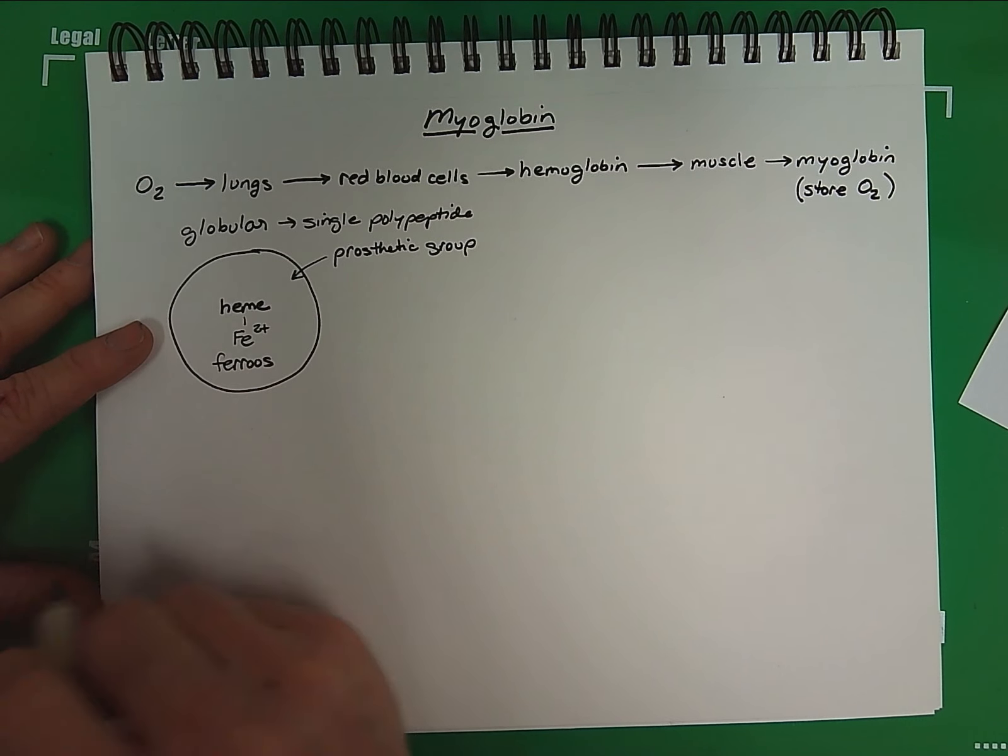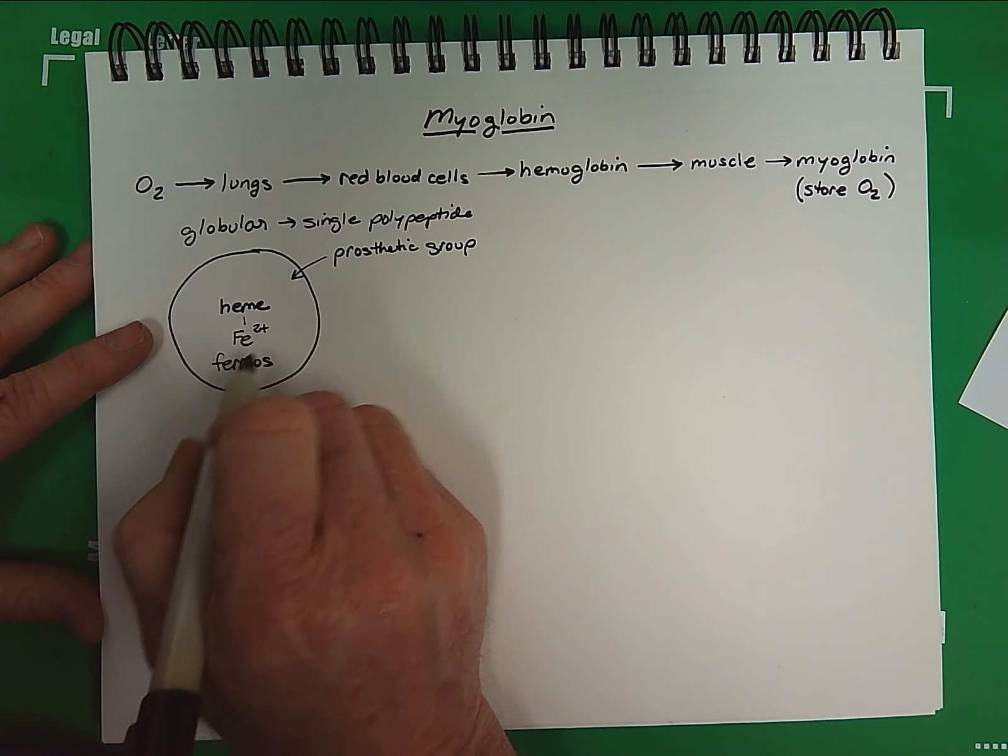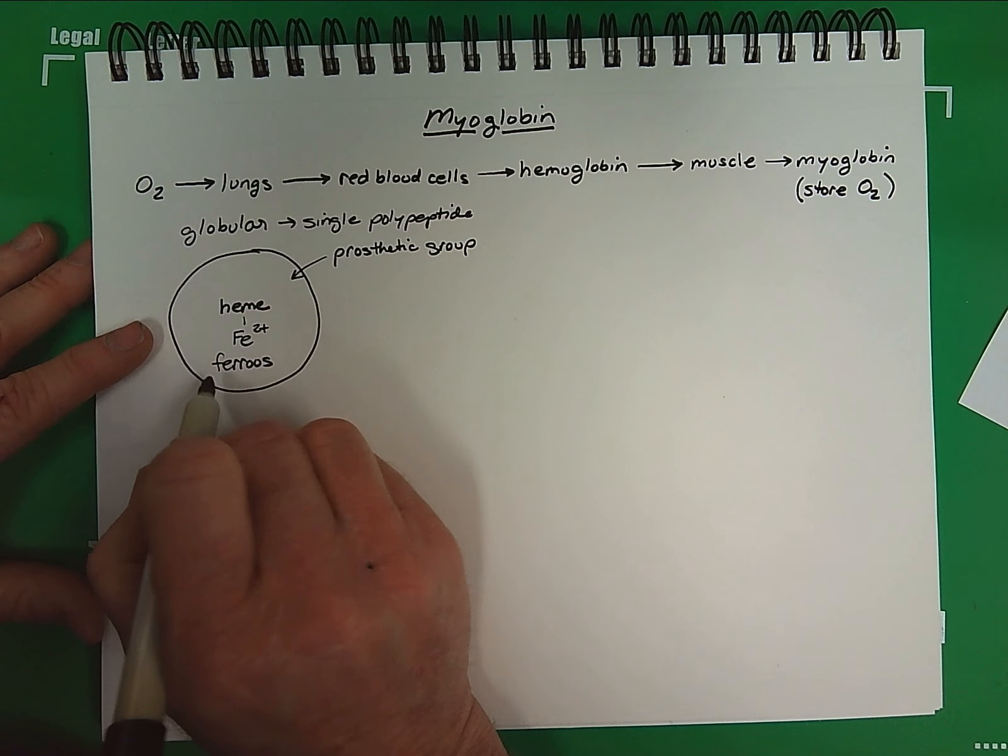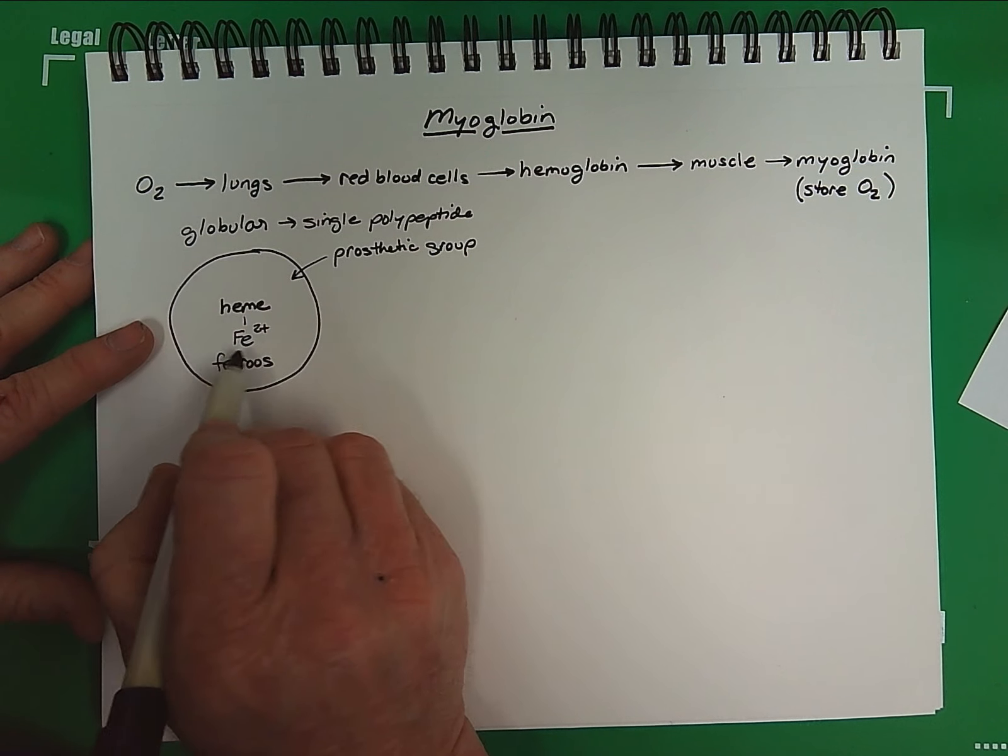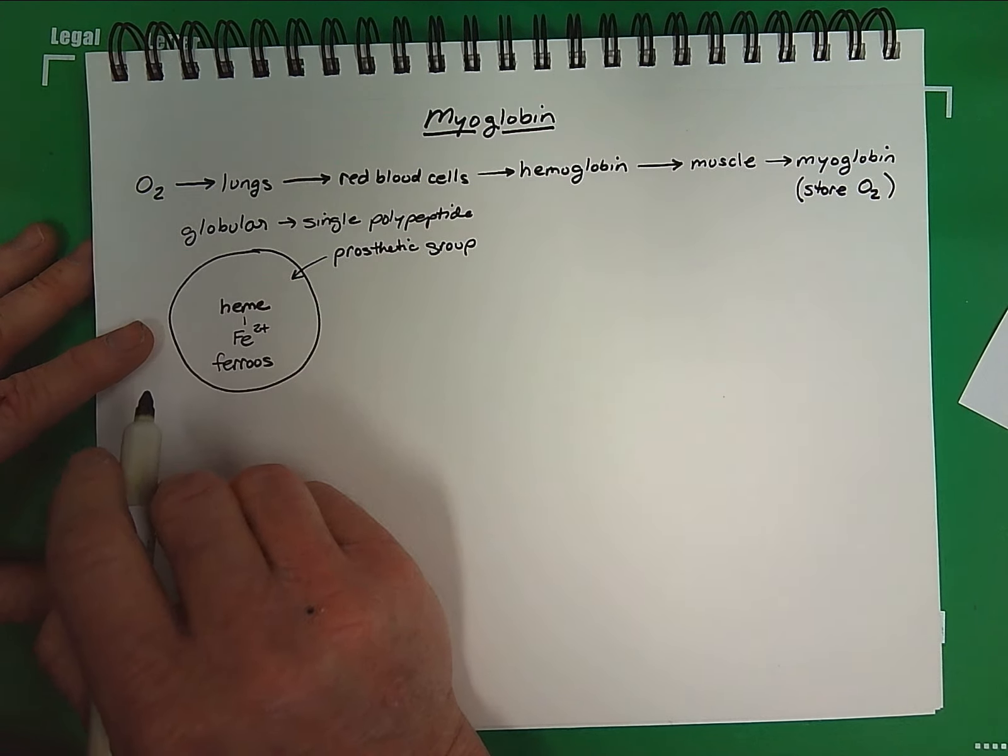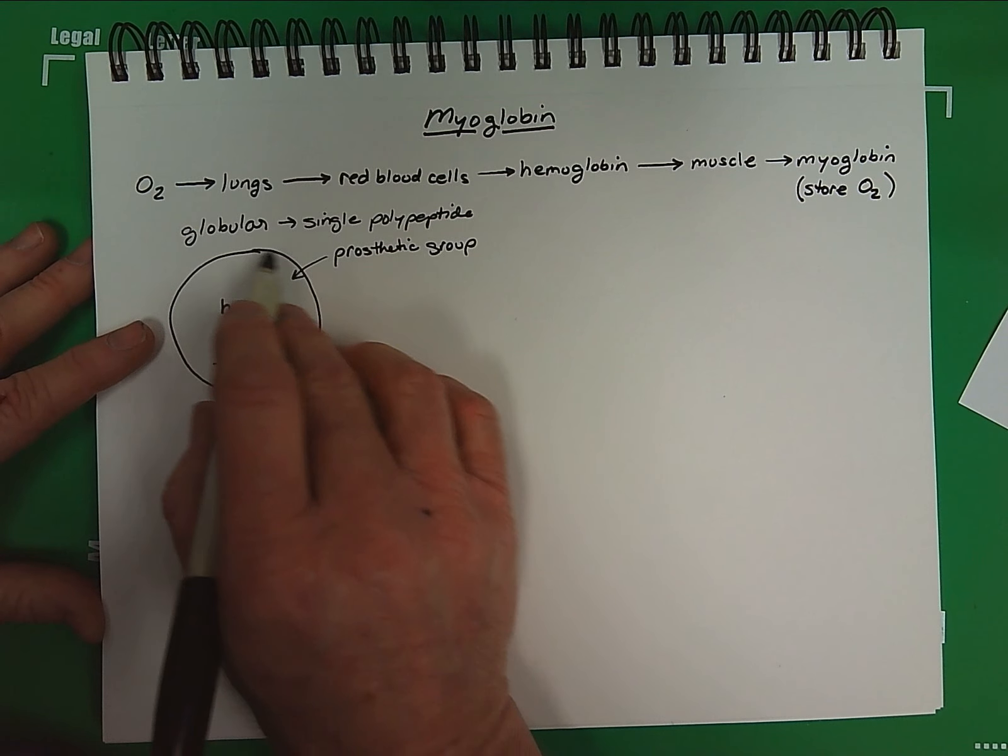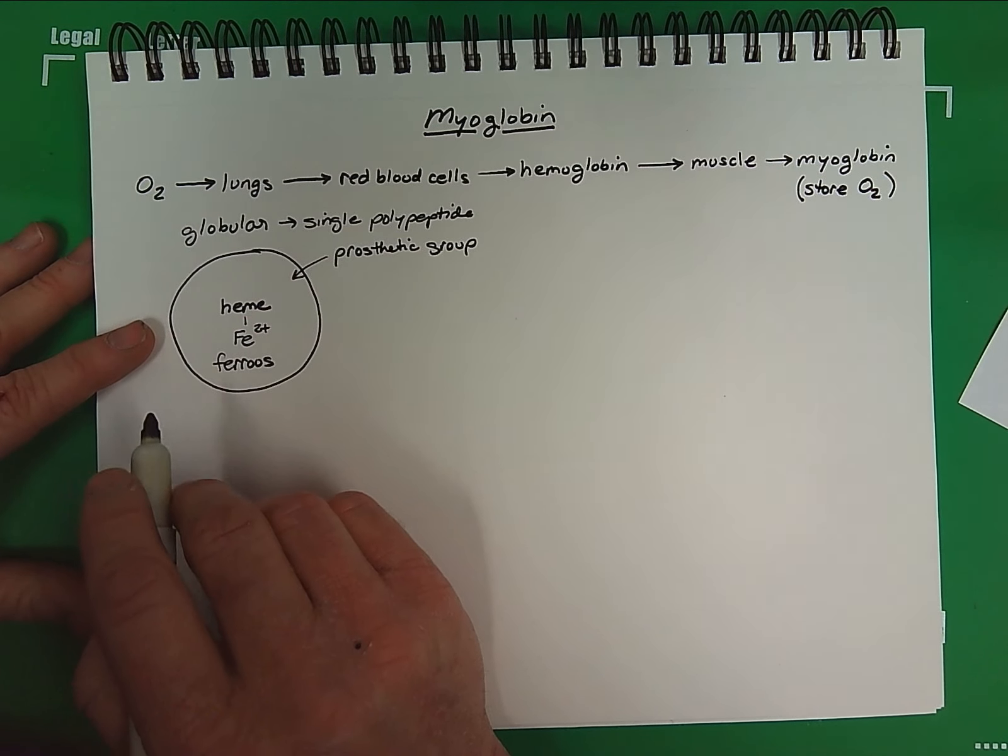Recall that iron can be either in a 2-plus reduced state or an oxidized 3-plus state. In the 3-plus state, it is ferric iron. In the 2-plus state, it is ferrous. So it is actually the iron that is bound to the heme that is going to bind the oxygen. The myoglobin itself is just a structural component of protein that is able to bind the heme and coordinate the oxygen binding.